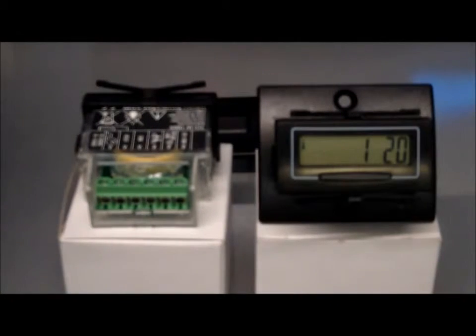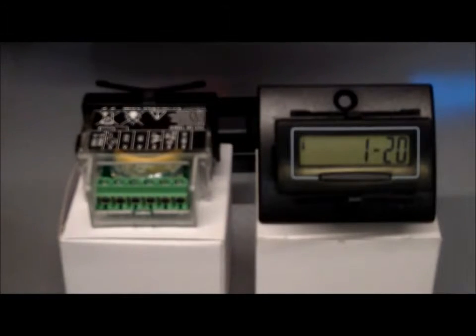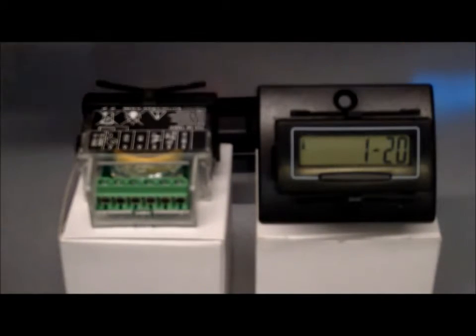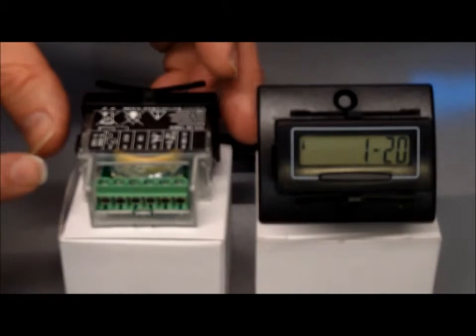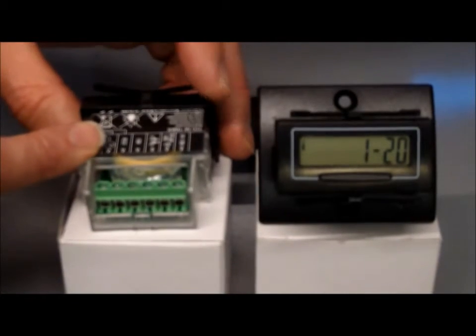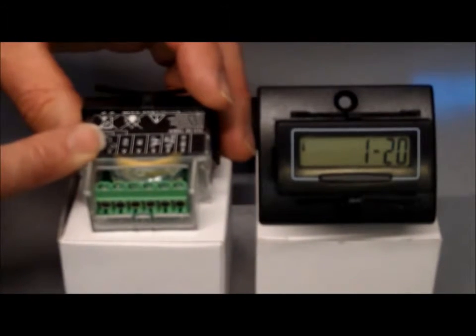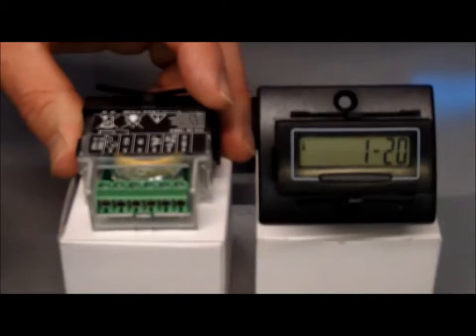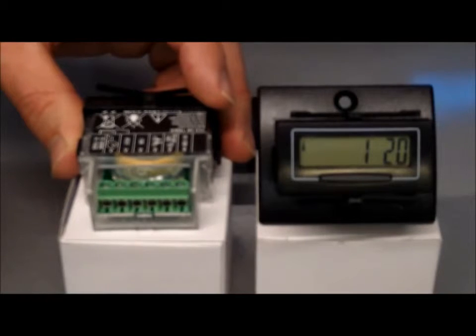The basic model takes a contact closure input to make it time, which is what this unit here is doing. The HV model allows you to input a voltage up to about 240 volts AC, so you can monitor things such as heating systems or machine on and off time, and anything where you can get an input from the voltage.